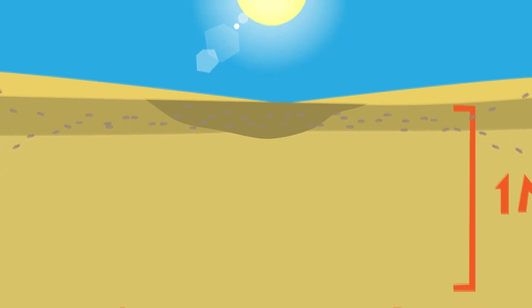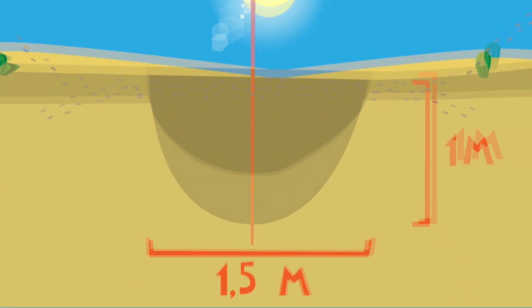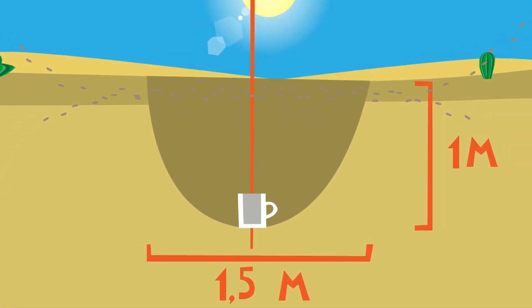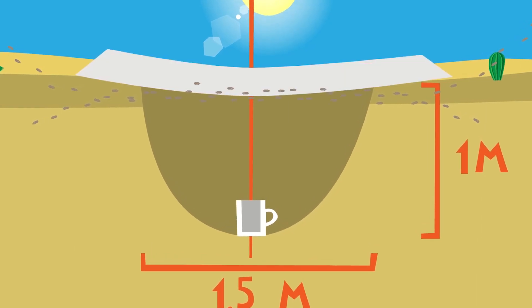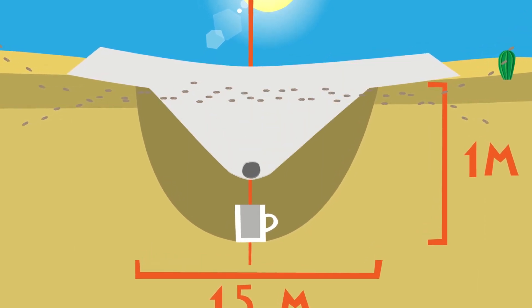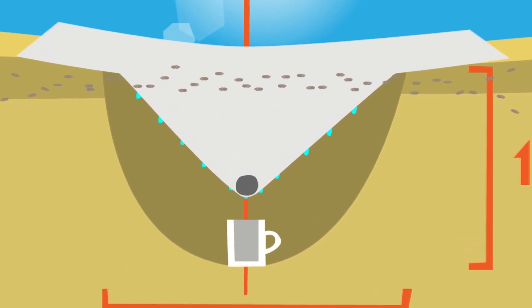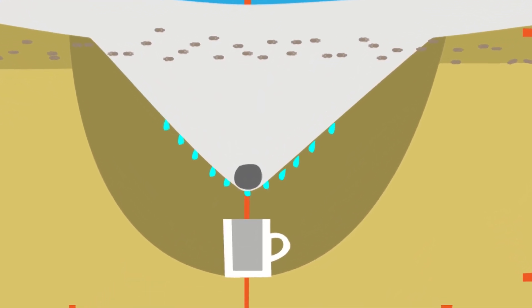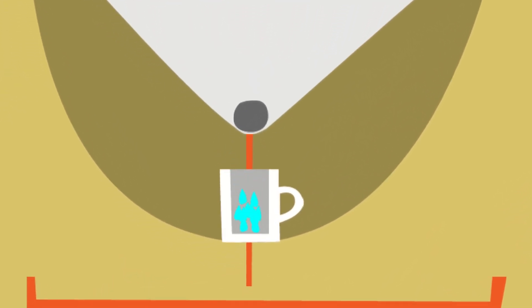Dig a hole up to a meter deep at one to one and a half meters in diameter. Place a bowl to collect water at the bottom of it, right in the center. Cover the hole with a film and lay a stone in the center so that it is directly above the vessel. As a result of condensation, water will appear in the vessel.